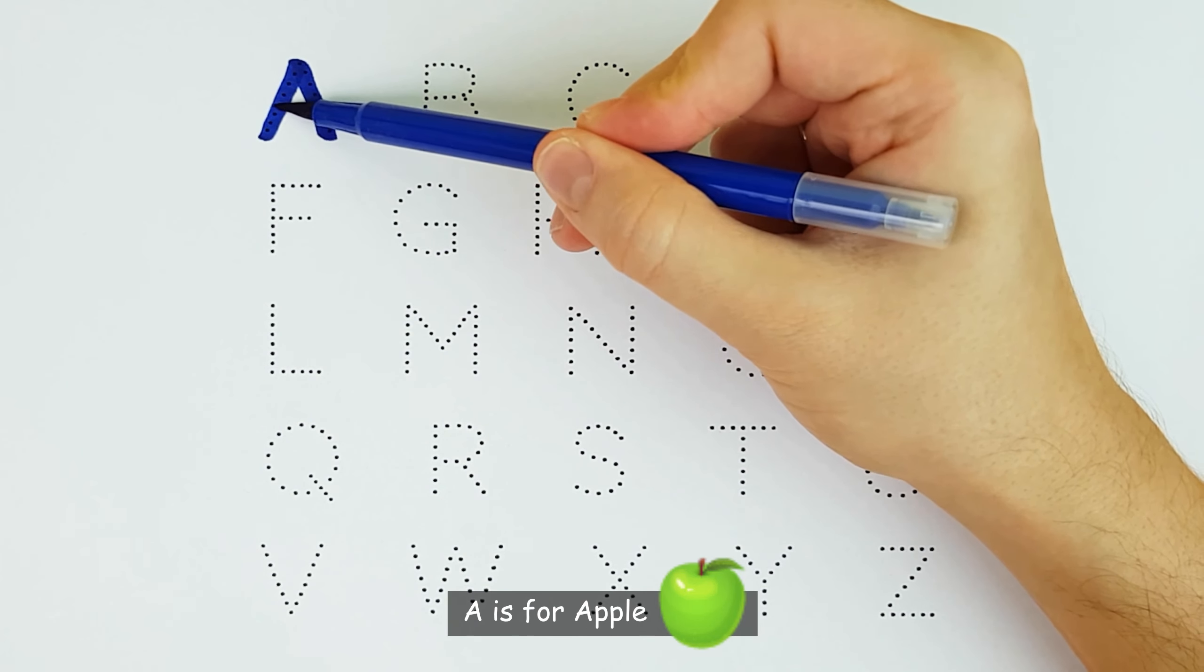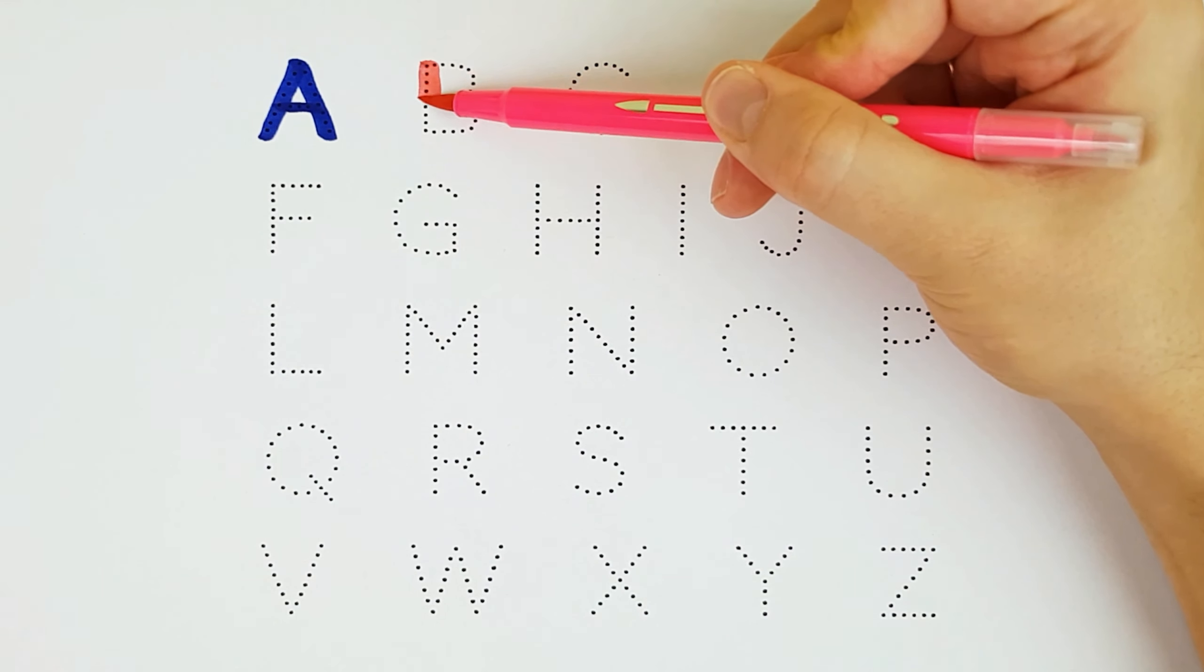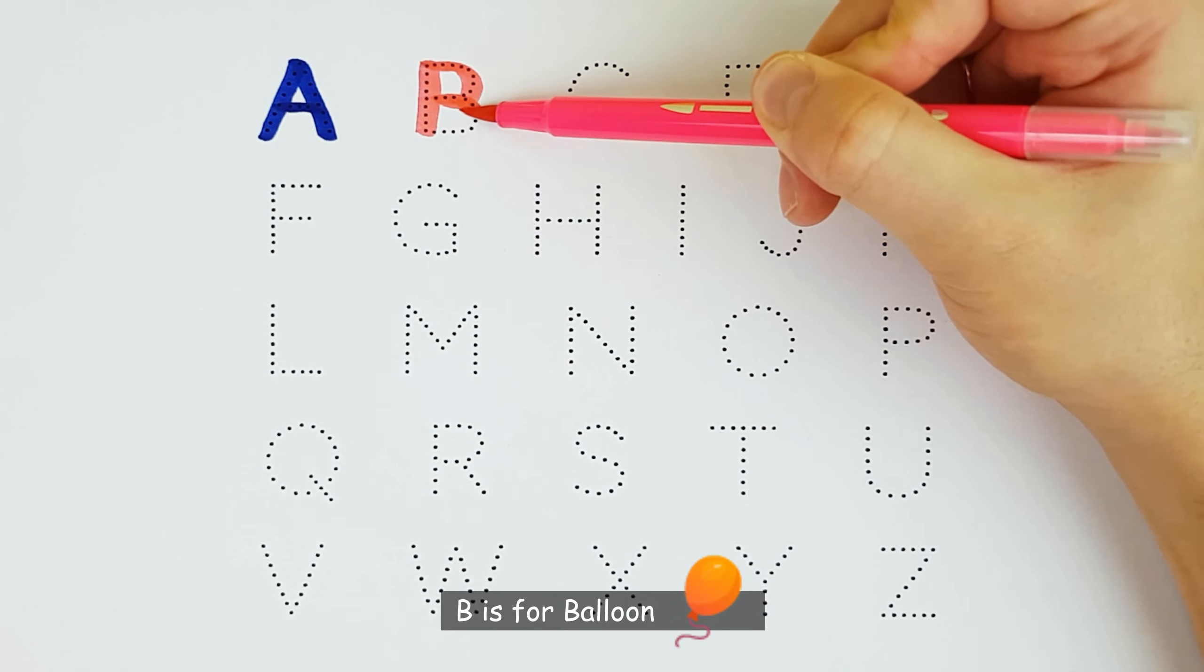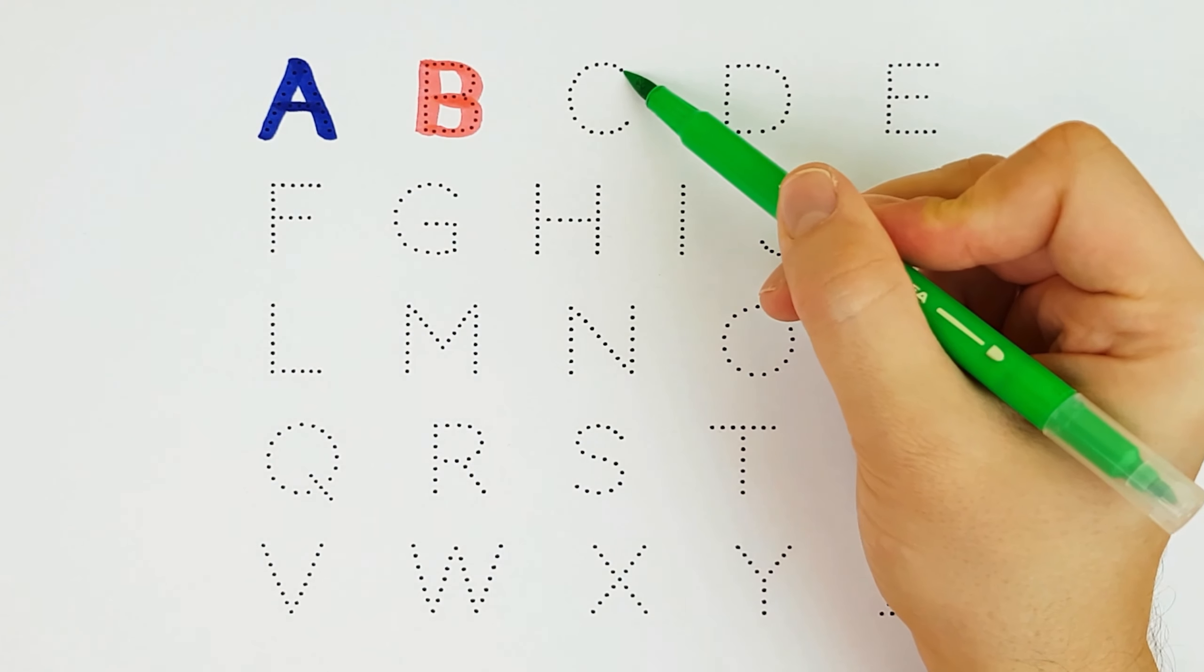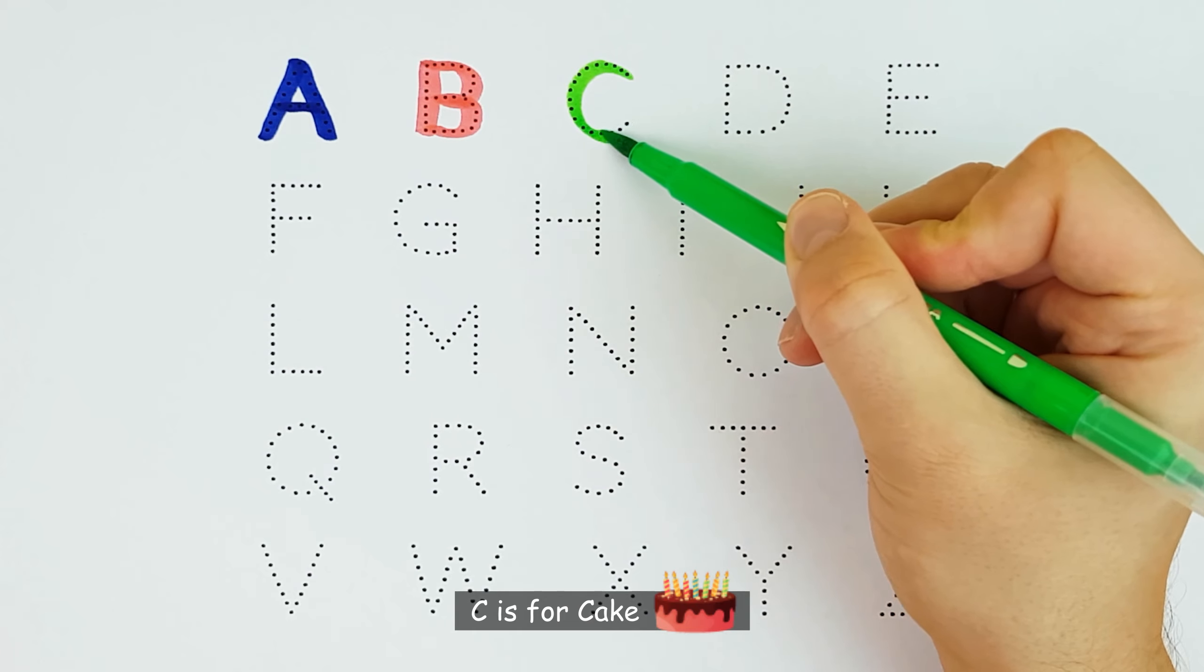A. A is for Apple. A. B. B is for Balloon. B. C. C is for Cake. C.